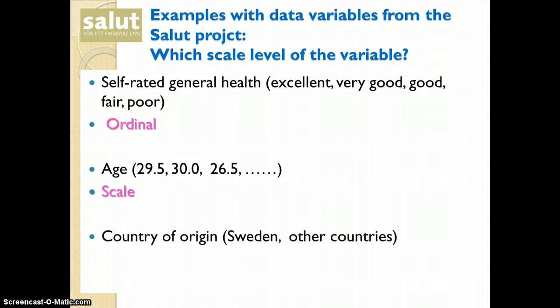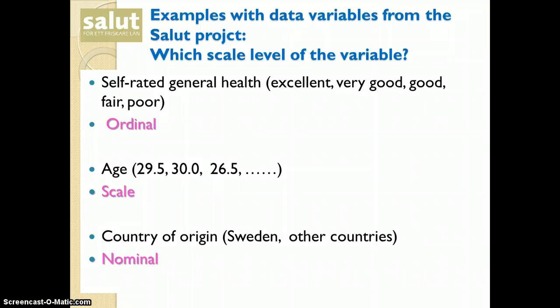The last variable is country of origin which could be either Sweden or other countries. The measurement level here is the nominal level. And this is because the individual belongs to a group and the groups cannot be ranked.